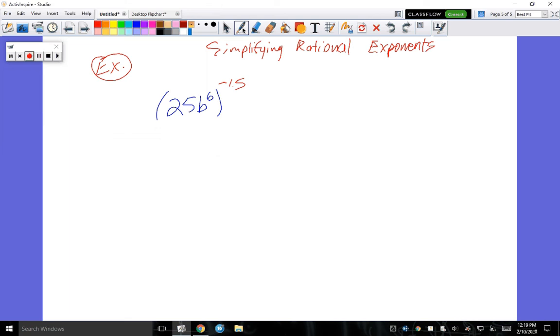This is a negative 1.5, so it's 25 times b to the sixth to the power of negative 1.5. Here we go.